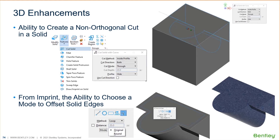We have a couple of changes on the 3D side of things that are kind of exciting. When you first look at this at face value, the ability to create a non-orthogonal cut in a solid — if you've done any 3D modeling, you'd say, well, I've had cut solid for a number of years and I use it all the time. However, a non-orthogonal cut on an element that is a parametric solid or a feature solid was not allowed in past versions — it had to have been a plain solid.